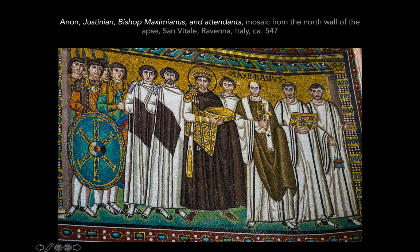Justinian is this emperor we've been talking about who does this massive rebuilding program in Constantinople. He commissions the Hagia Sophia — he's a really important emperor who survived the Nika riots and all these revolts and political upheavals. This mosaic is not in Constantinople; it's in Ravenna, Italy — briefly a part that wasn't taken over by the northern migratory tribes. This is Justinian himself, although he never actually went to this church, never stepped foot in Ravenna. The image of a ruler can stand in for that ruler — there's a history of representations of rulers being part of a meeting, where everyone understood that ruler was actually present.